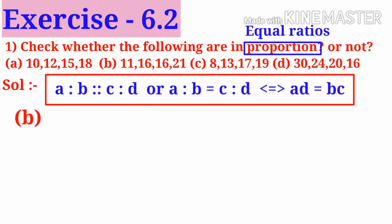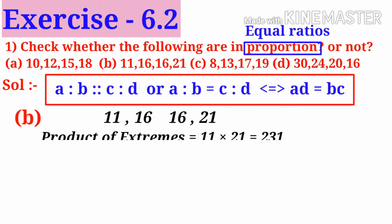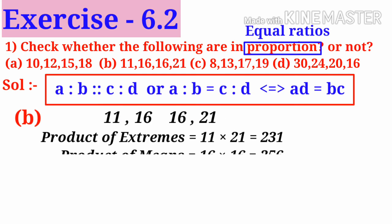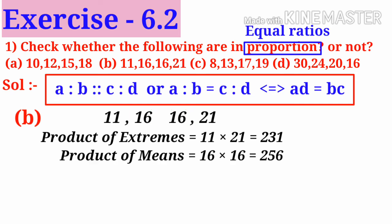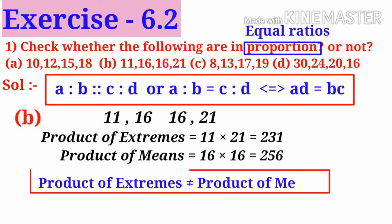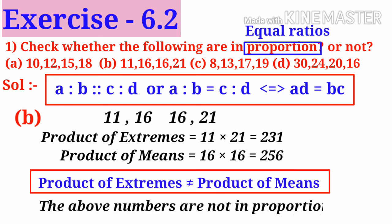Next B: 11, 16, 16, 21. Take the extreme values 11 and 21. Take the product: 11 into 21 is 231. And take the middle terms, 16 and 16. Take the product: 16 into 16 is 256. Observe that these values are not equal. So product of extremes is not equal to product of means. So the above numbers are not in proportion.